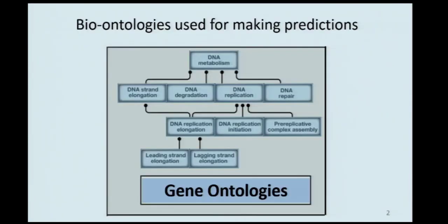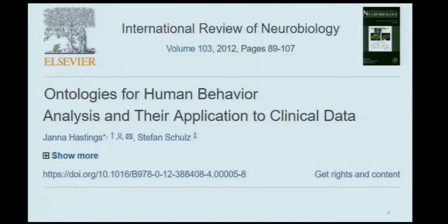As we have seen, there are ontologies in the biomedical realm being used to make predictions. For instance, if you know that a given gene is present in a given sample, you know there could be activity of a certain sort given certain stimuli. The gene ontologies are the best example. But we can apply ontologies not just to predict behavior at the level of biochemistry or cell biology, but also at the level of human behavioral biology.